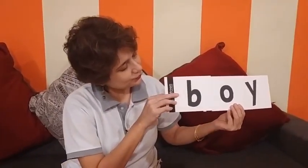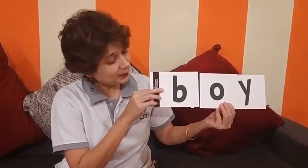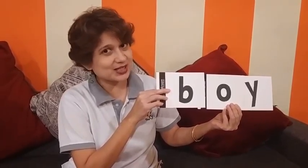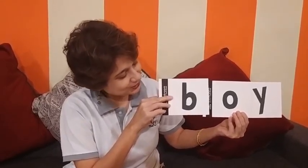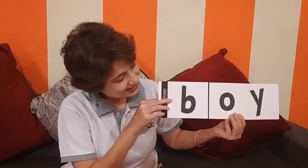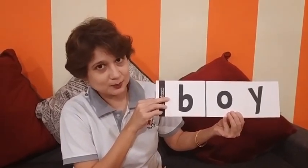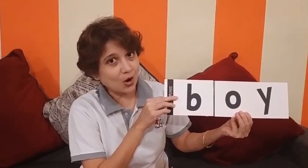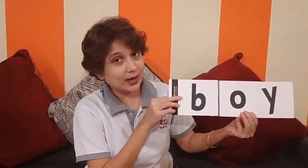Look at this. Which letter can you see? This is B, and B says B. Now remember, henceforth we are just going to say the phonic sounds. I am not going to tell you which letter this is. So now we will read this as B, OI — BOY. Please repeat after me: B, OI, BOY.